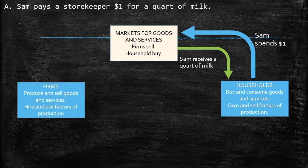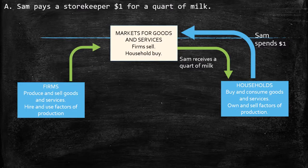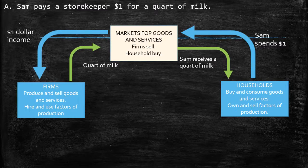On the other side, there are the firms that produce and sell goods and services. The firm provides the quart of milk, and in return receives revenue — the $1 income.